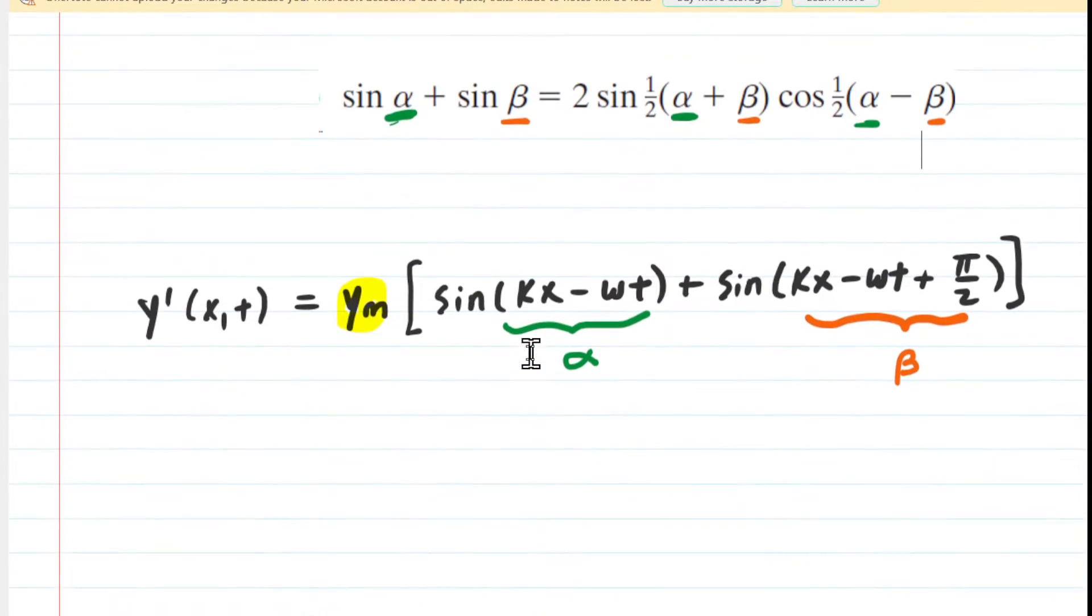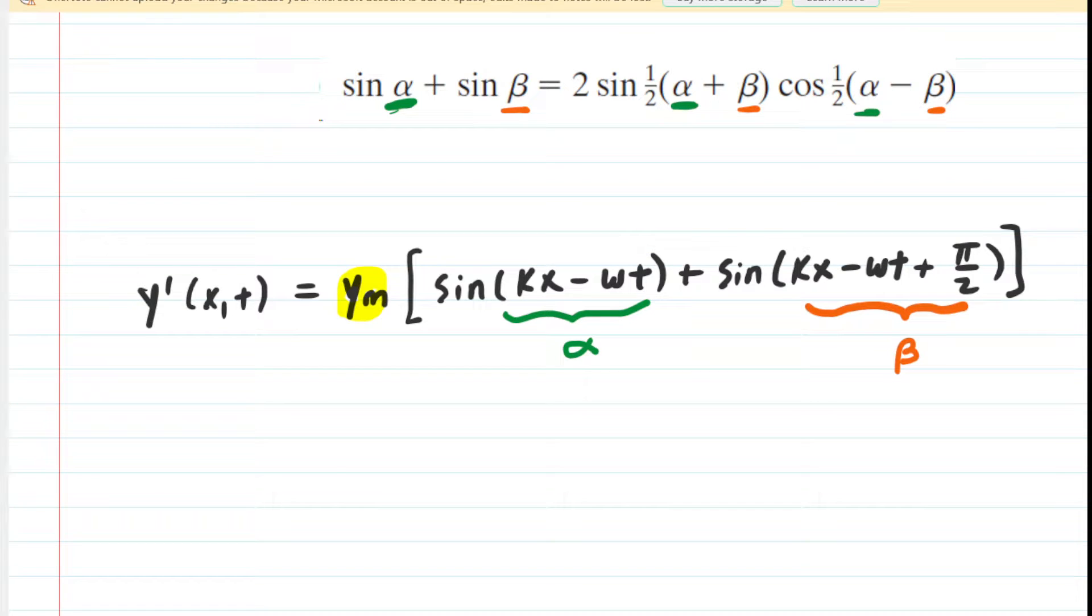We're now going to employ the identity. For the first part of the identity, we're going to have 2 sin of 1/2 of the sum of α and β. Let's go ahead and set that up.